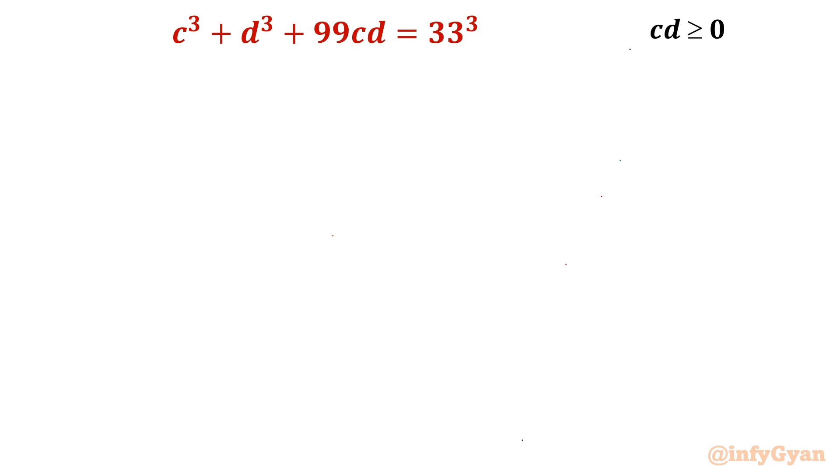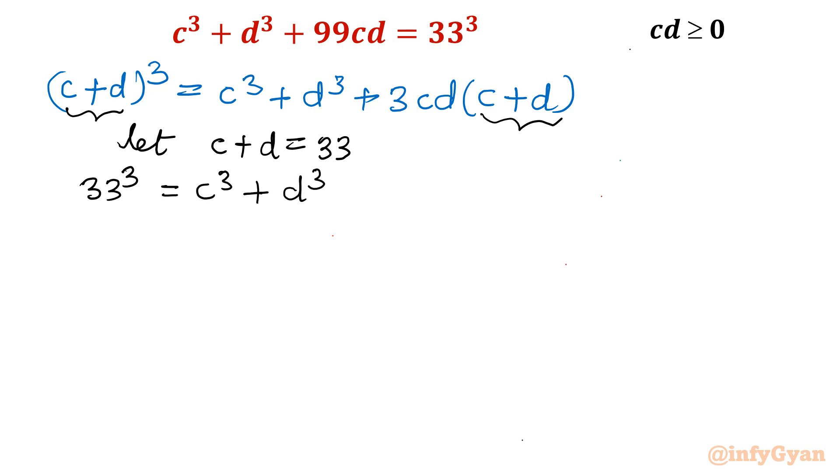So let us get started this problem by writing one strong identity of algebra, the (C+D)³ formula. So (C+D)³ is C³ + D³ + 3CD(C+D). Now I will give substitution. Let C + D equal to 33. See what will happen. It will become 33³ = C³ + D³ + 3CD times 33.